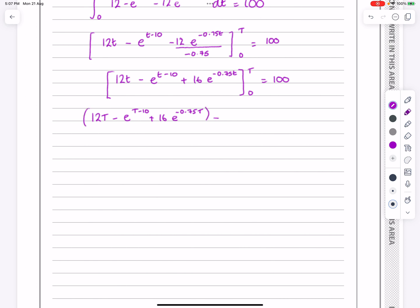Let's tidy that up. I've got 12t minus e to the t minus 10 plus 16e to the minus 0.75t, all between T and 0. It's hard to do that and to talk to you guys, but I'm hopefully getting there. Put T in, that's going to give me 12T - e^(T-10) + 16e^(-0.75T). And all of that, that's part of that answer that I was trying to get to. So it's that minus sticking 0 in it.